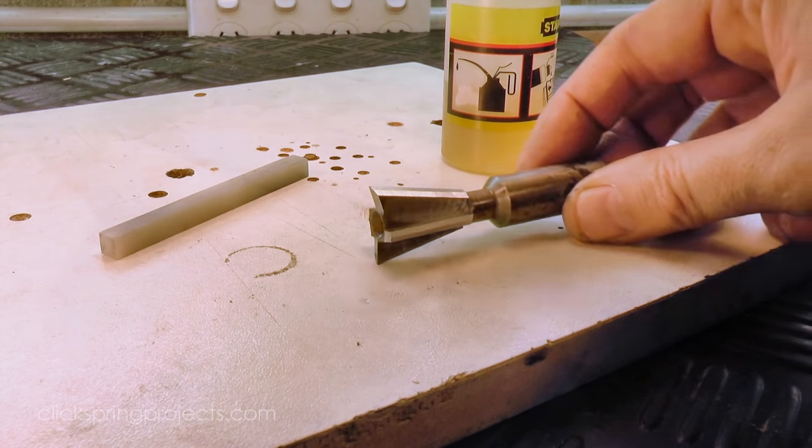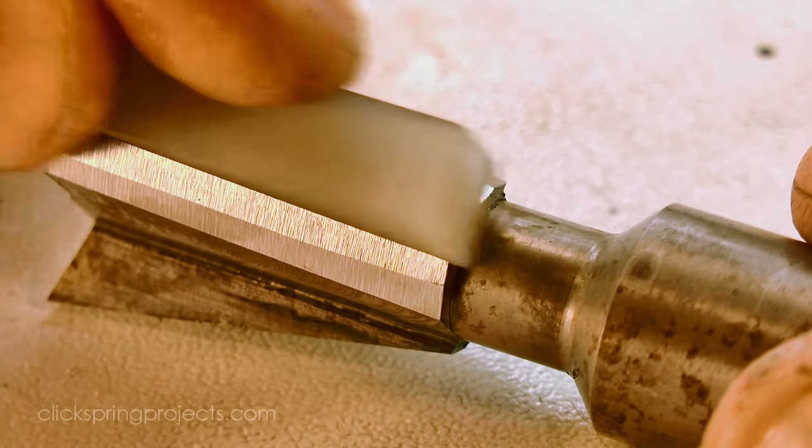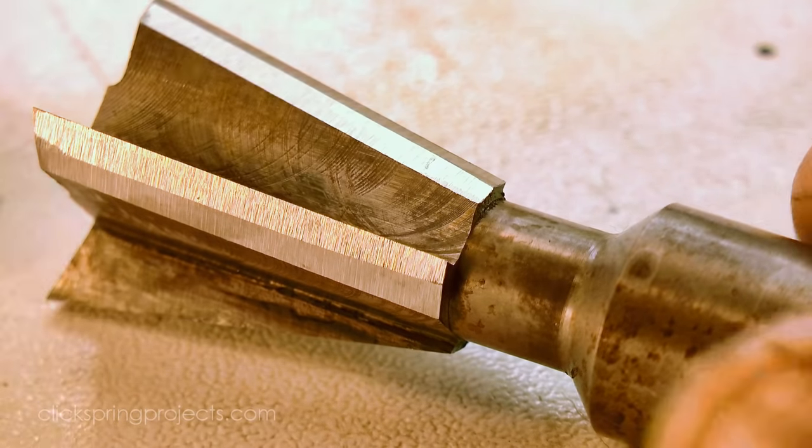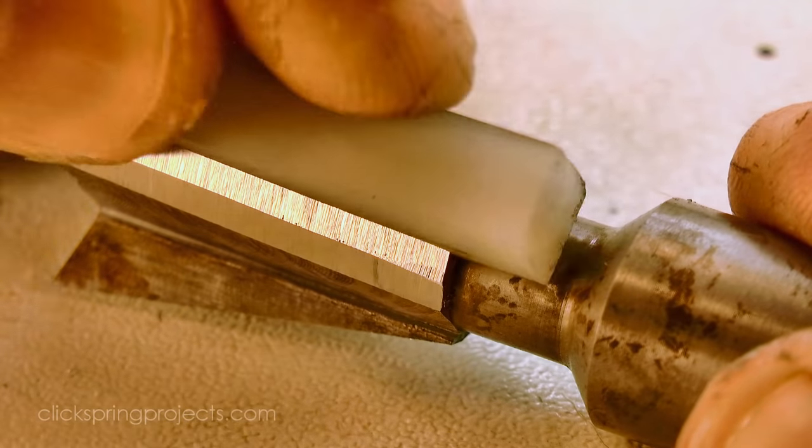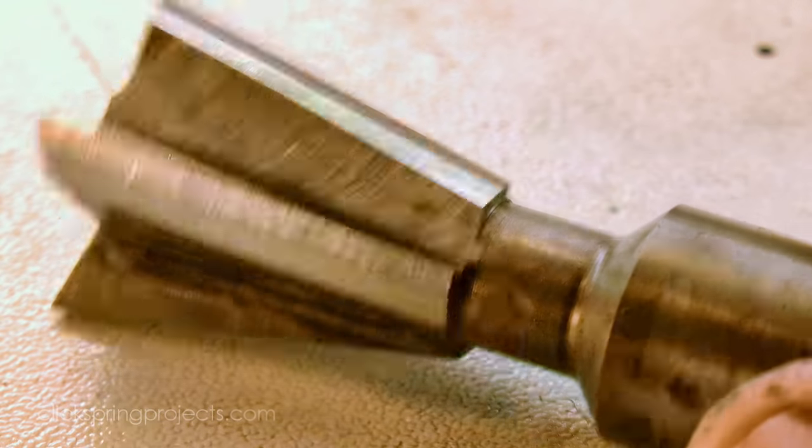At this point the cutter is basically complete. It just needs to have the small burrs removed and the cutting edges honed. And I've found that it's a particularly easy cutter to sharpen. It sits comfortably on the bench, and a small oil stone runs neatly down the flutes.